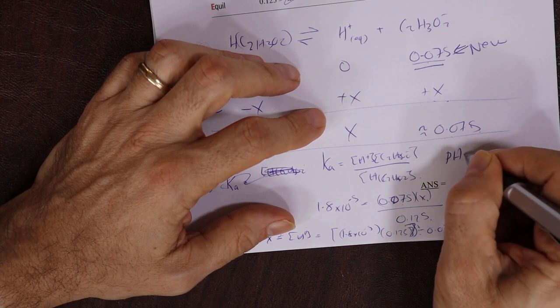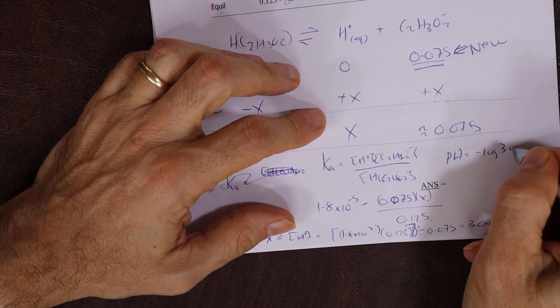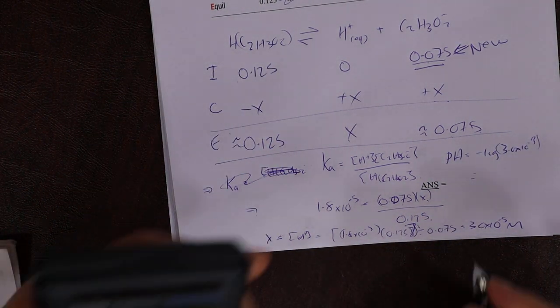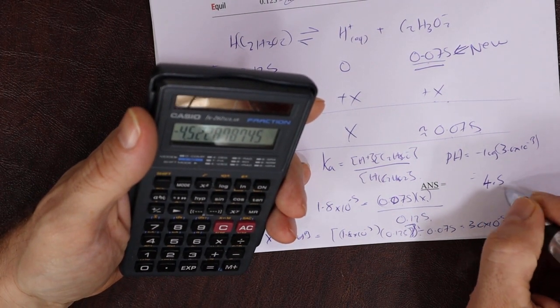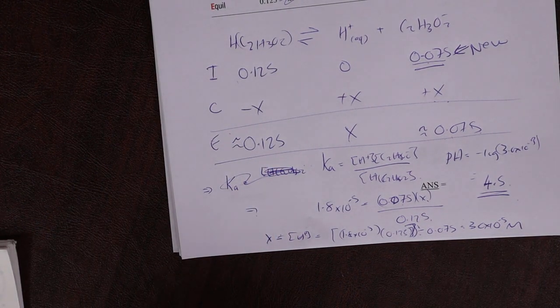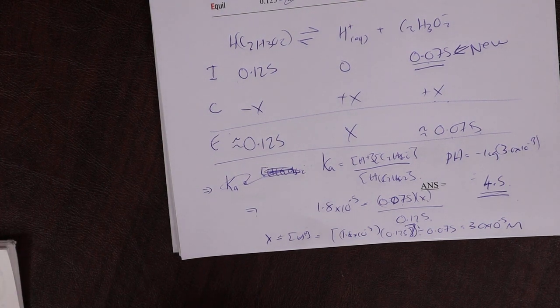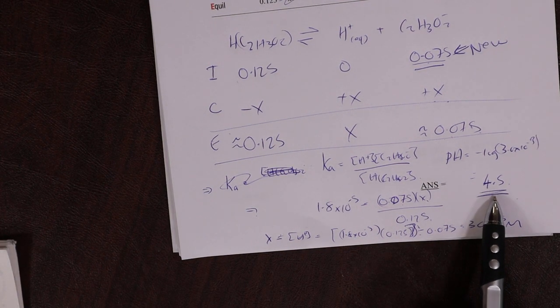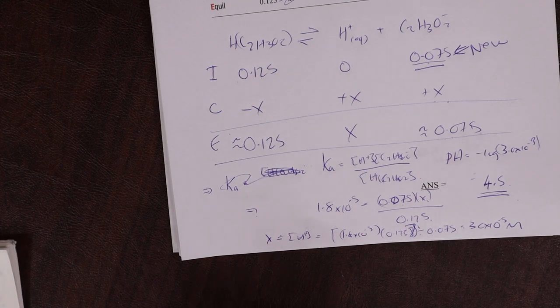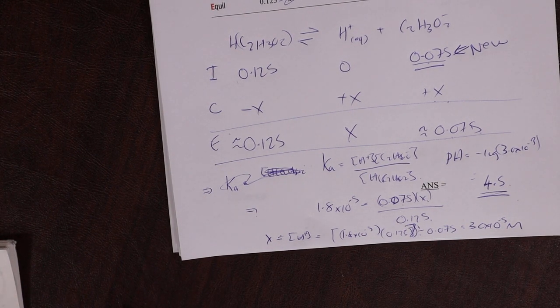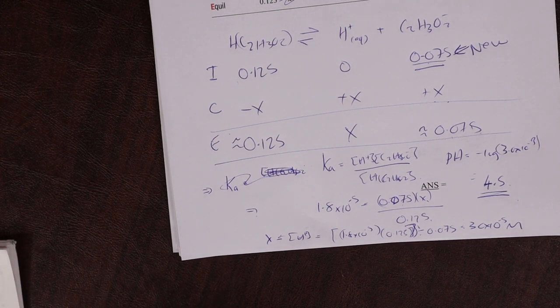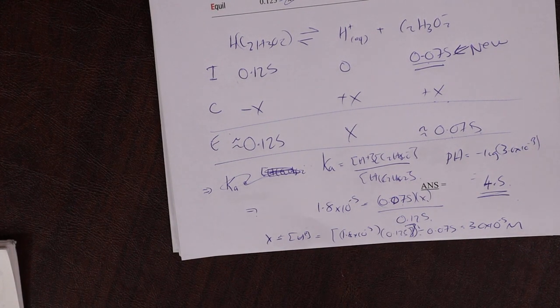So therefore, X which equals H+, equals 1.8 times 10 to the minus 5 times 0.125, and then divide by 0.075. Let's do that real quick. 1.8 times 10 to the minus 5 times 0.125 divided by 0.075 equals 3.0 times 10 to the minus 5 mole per liter. Therefore pH equals minus log of H+ concentration, 4.5. It's acidic. So that's the pH of that, essentially what is a buffer solution. And for details we'll talk about in a little bit, this solution will maintain its pH. When we have a weak acid in its conjugate base in the solution, we can add a little bit of acid, we can add a little bit of base, and as we'll see, the pH is essentially maintained. Work through that one nice and slow, make sure it makes sense.